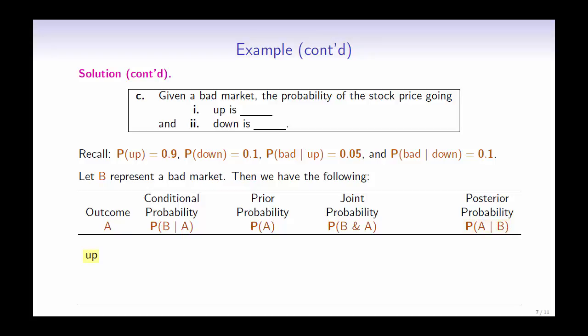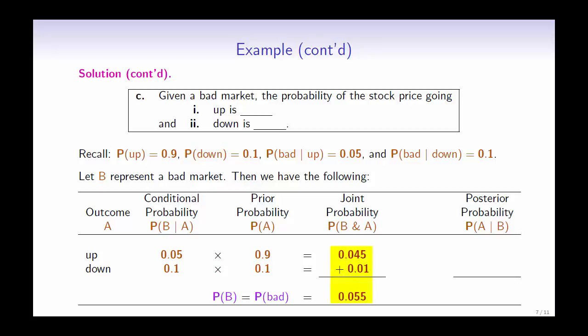For the outcome that the stock price goes up, we have the conditional probability 0.05 times the prior probability 0.9, which gives us the joint probability 0.045. For the outcome that the stock price goes down, we have the conditional probability 0.1 times the prior probability 0.1, which gives us the joint probability 0.01. Adding up the two joint probabilities, we have 0.055, the probability of a bad market.